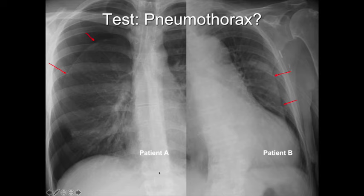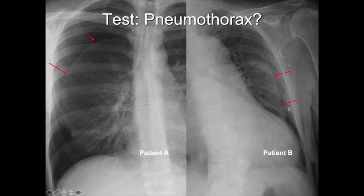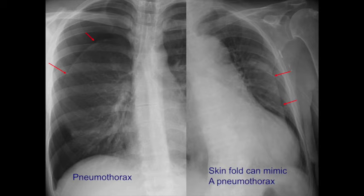Patient A — is this a pneumothorax? Yes it is. You have a pleural line, you have lung markings here, and you have no lung markings peripheral to that line. Patient B — is this a pneumothorax? You have lung markings medially, you have a line, and then peripherally you still have lung markings. This is a skin fold mimicking a pneumothorax — essentially a fold in the patient's soft tissues creating an artificial line.